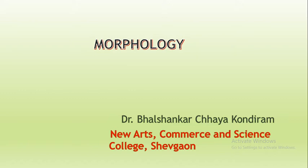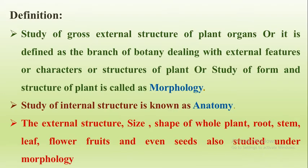Today I am going to discuss the first chapter, that is morphology. So what is morphology? The study of gross external structures of the plant organ. Or it is defined as the branch of botany dealing with the external features or characters or structures of plant. Or you can say that the study of form and structure of plant is called morphology.